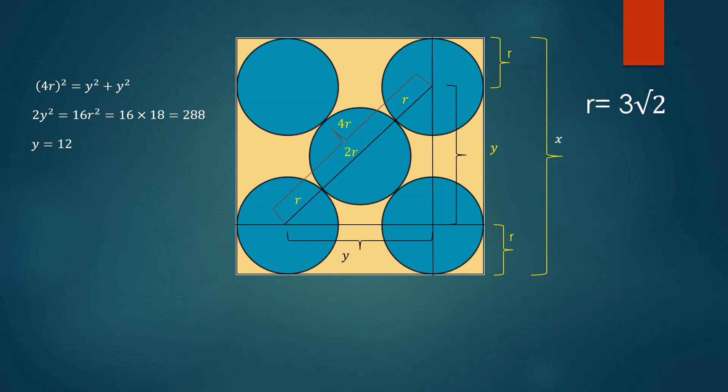Substituting the values we get x equals 6 times 2 plus root 2. This concludes the problem.